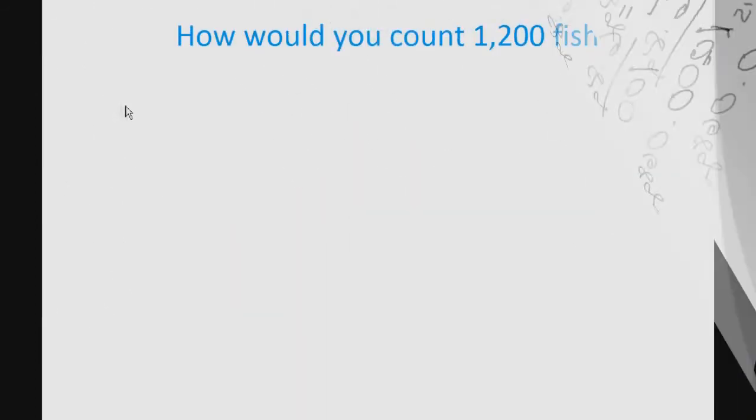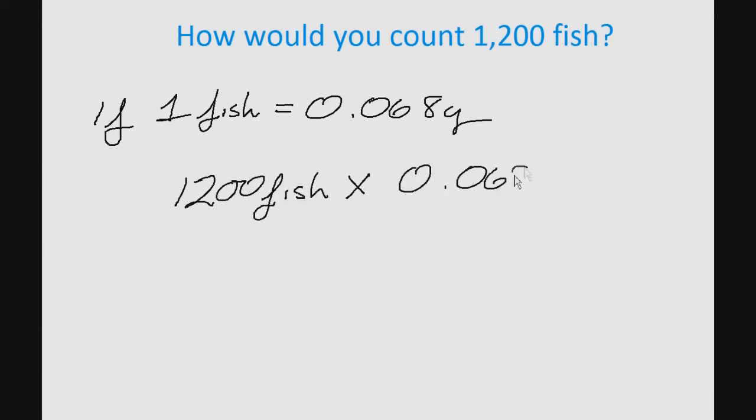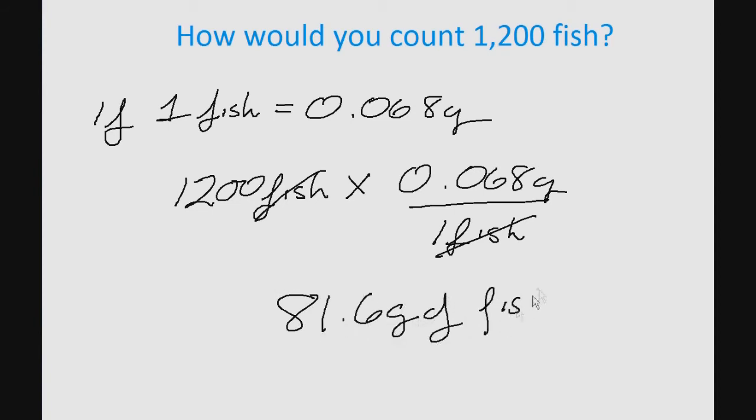If the boss says we need 1,200 fish, how many grams of fish do we need to weigh out? We multiply 1,200 fish by 0.068 grams, which we calculated to be the average weight of one of our fish. Cancel our units. And we calculate we need 81.6 grams of our fish to have the 1,200 fish the boss needs.